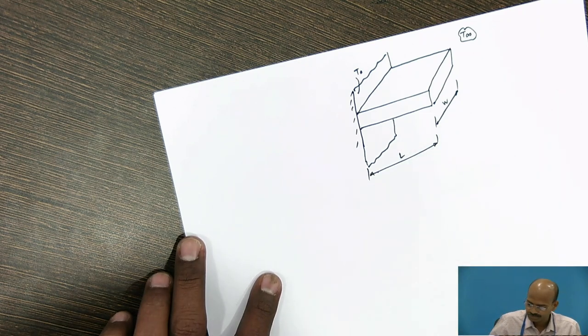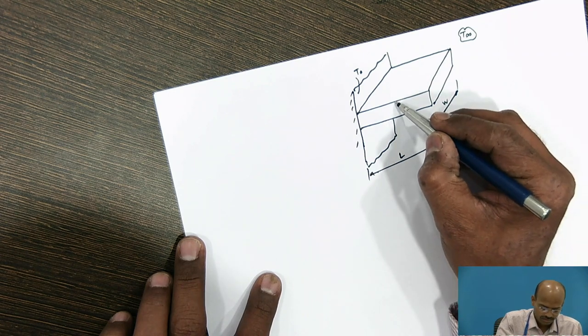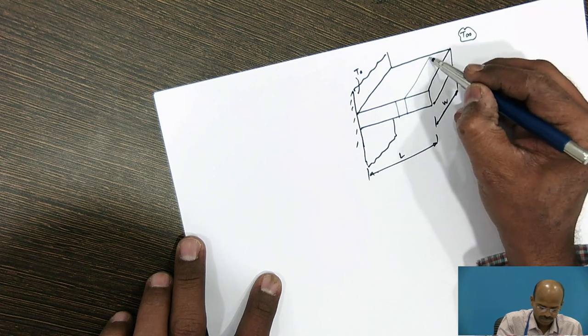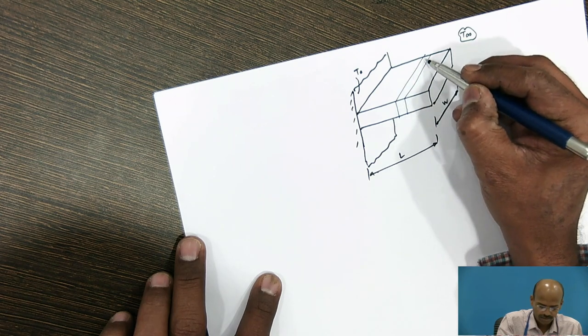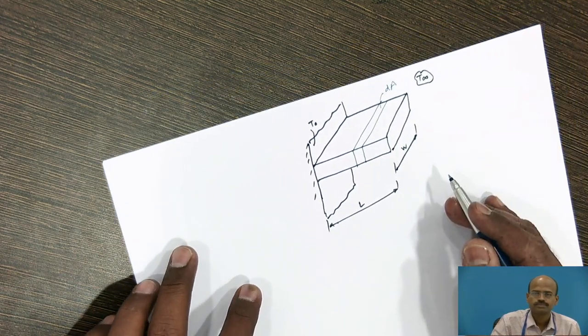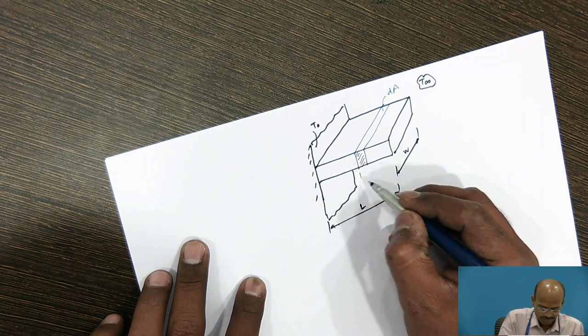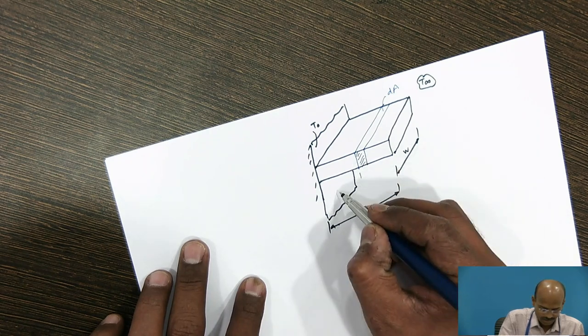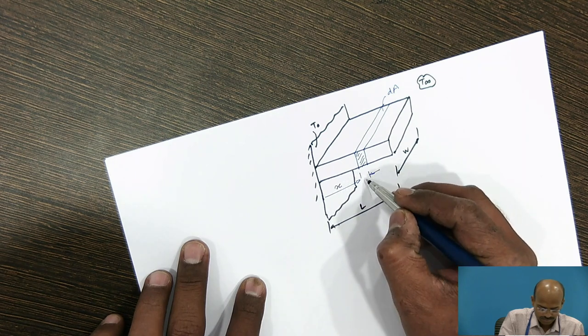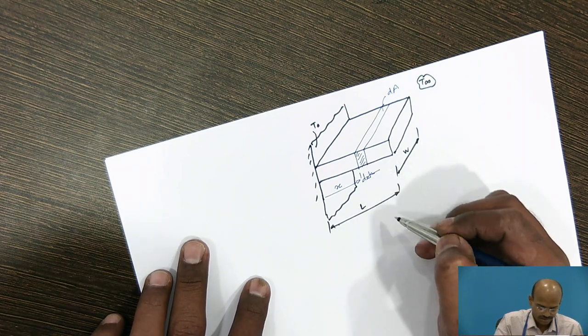We will consider elemental area dA. This is the elemental area. On x-axis, the distance is x. This area thickness is dx.